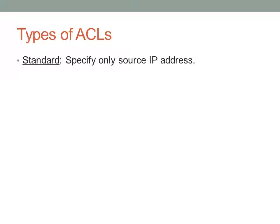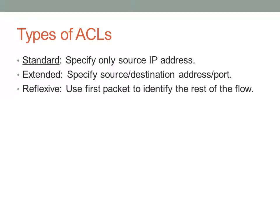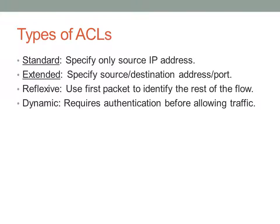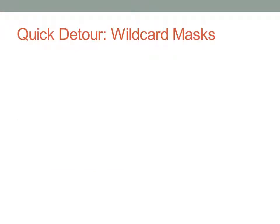The first type is a standard access list — with standard access lists, you only specify the source IP address. With extended access lists, you can specify a source and a destination, an IP address and a port, possibly a protocol, and other things. There are also reflexive access lists, which identify a first packet and then allow the rest of the flow. Dynamic access lists require you to log in before the access lists take effect. There are also time-based access lists, which apply at different times of the day. We're only going to discuss the first two.